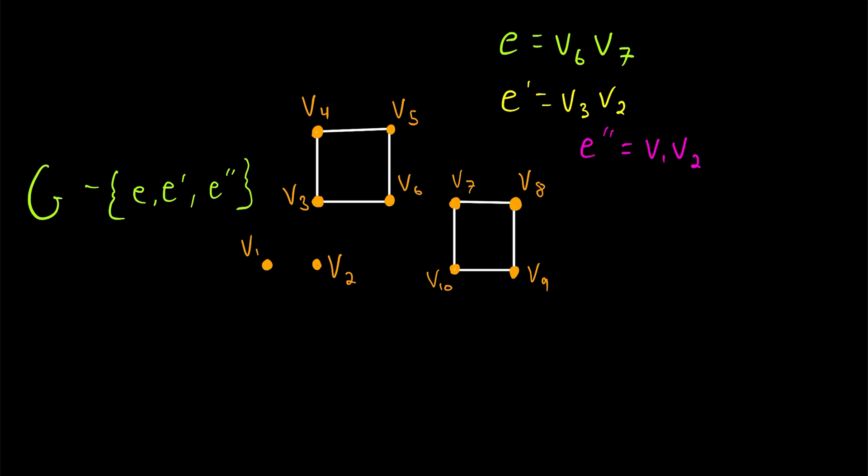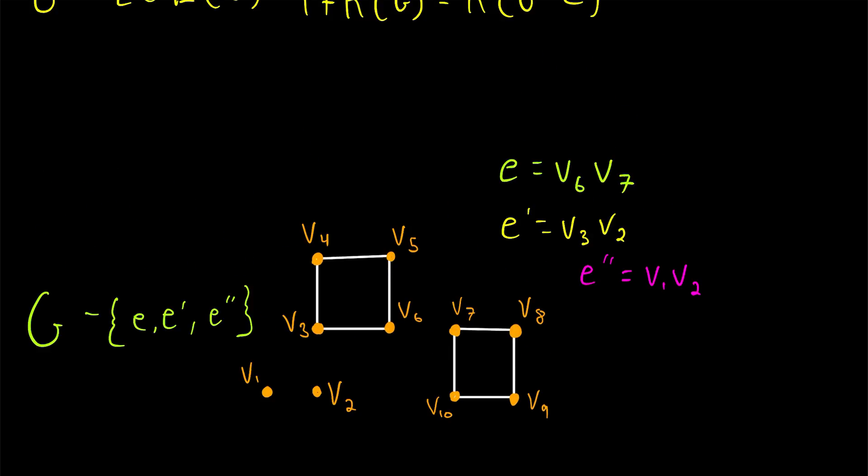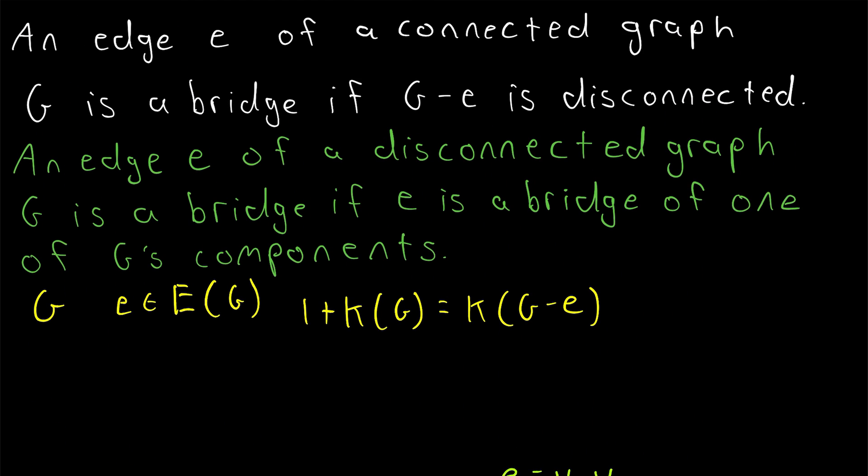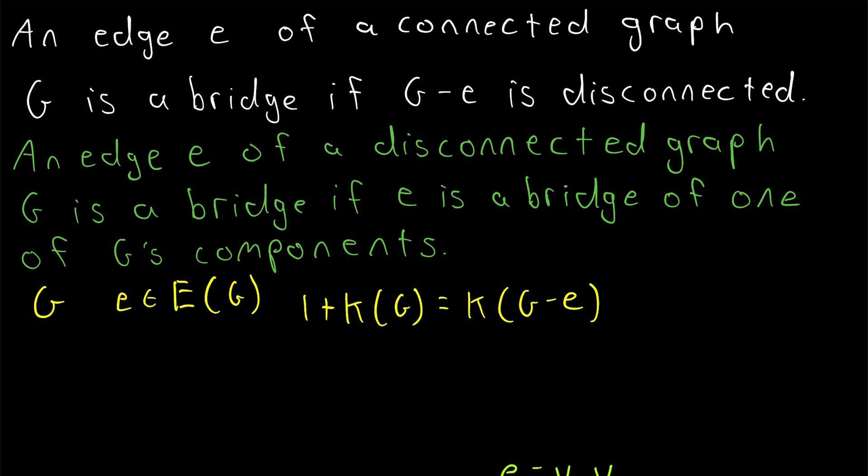One more time, let's state the definition of bridge in general for any graph, connected or otherwise. An edge E of a graph G is a bridge if deleting it disconnects any of G's components. So I hope this video helped you understand what bridges of graphs are. Let me know in the comments if you have any questions, need anything clarified, or have any other video requests. Thank you very much for watching, I'll see you next time, and be sure to subscribe for the swankiest math lessons on the internet.